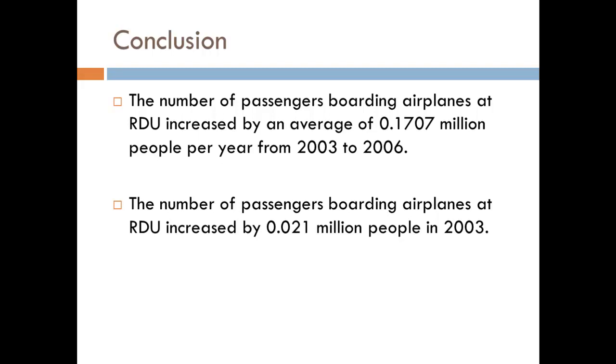The second thing is that the number of passengers boarding airplanes at RDU increased by 0.021 million people in 2003. This is the instantaneous rate of change. The main difference between an instantaneous rate of change and an average rate of change is that an average rate of change gives you the change per year in this case over a multiple year period, whereas the instantaneous rate of change gives you the change per year, but only during a one-year time. Average rate of change is the change over an interval. Instantaneous rate of change is the change at a point in time.